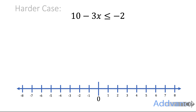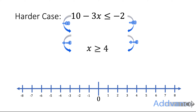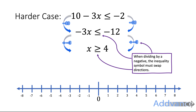Now a harder case: 10 minus 3x is less than or equal to minus 2. We subtract 10 from both sides to get minus 3x is less than or equal to minus 12. We need to divide by minus 3, but here's the trick — if you divide by a negative, you must swap the direction of the inequality sign, because dividing by a negative changes the direction of the numbers. So the final answer is x is more than or equal to 4. Notice the inequality sign swapped direction when we divided by a negative.